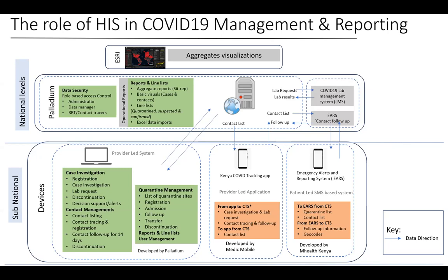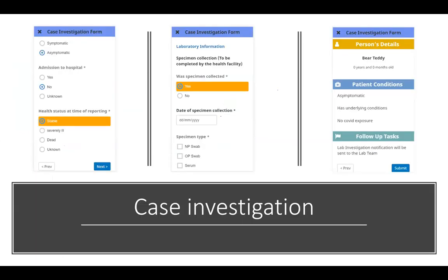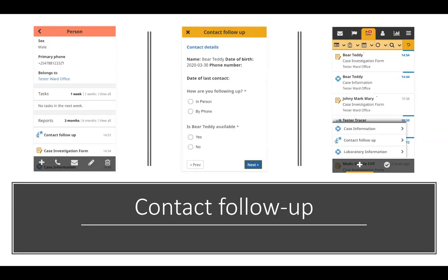These are screenshots of the community health tool by Medik Mobile, which allows for offline capture and notification on suspected COVID cases and for lab investigations. The first two screenshots show a snapshot of the case investigation form and the laboratory component collected in the community. This form is then synchronized to the OpenMRS COVID-19 tracking system at the national level for further action. Contact tracing can also be done through the app — a screenshot shows an individual listed as a contact being followed up. The middle screenshot shows follow-up can be done in person or by phone.